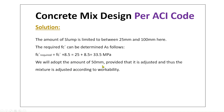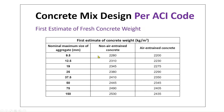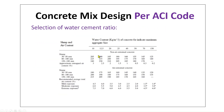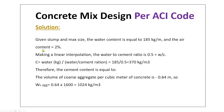Given a slump of 50 mm and maximum aggregate size of 19–20 mm, the water content is evaluated from the table to be 185 kg/m³. The slump of 50 mm lies within the applicable range for non-air-entrained concrete, giving 185 kg per cubic meter water content. The air content is therefore 2%.